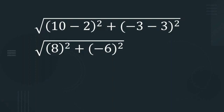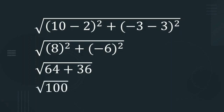10 minus 2 is 8 and minus 3 minus 3 is minus 6. So 8 square plus minus 6 the whole square. 8 square is 64, minus 6 the square is 36. When we add these two we get 100.